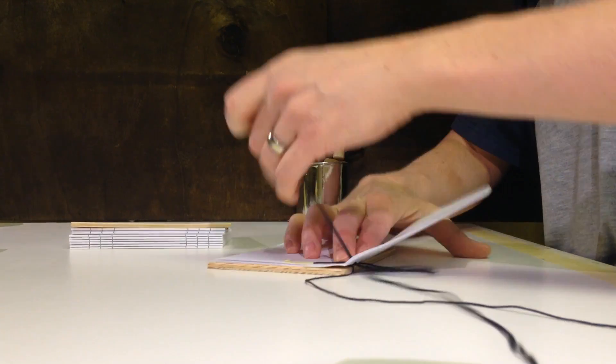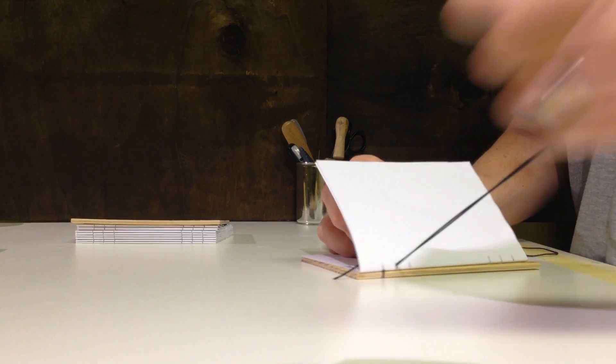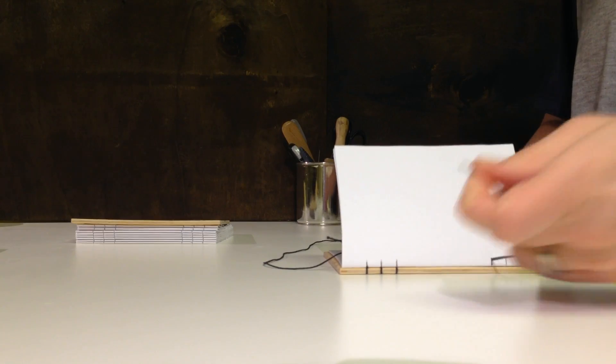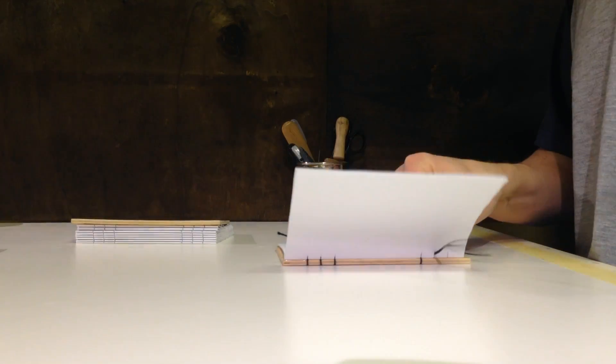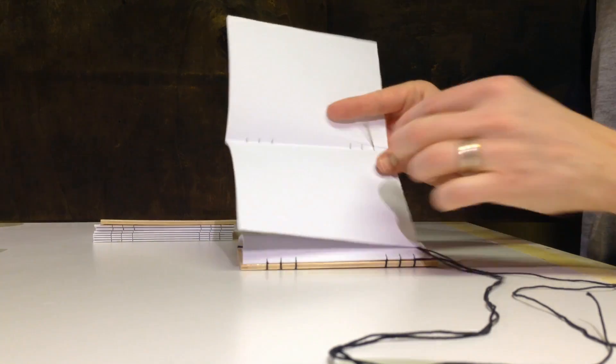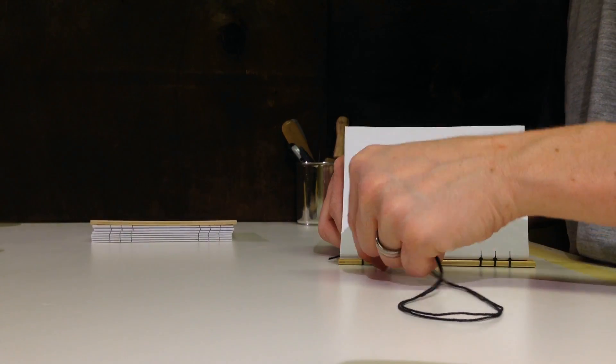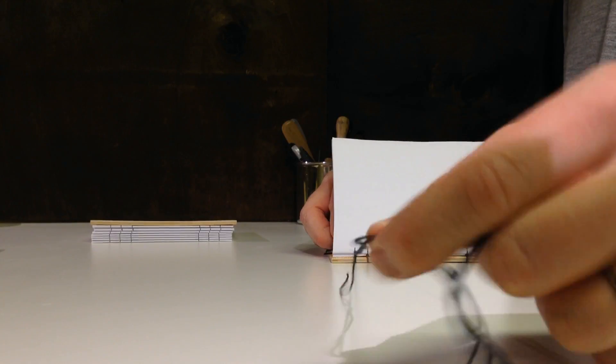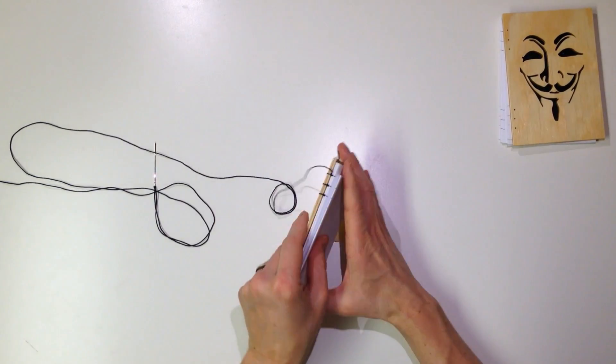Using slits rather than holes in the signatures makes the stitches sit a bit deeper on the spine. The whole process of binding one book takes approximately 50 minutes.